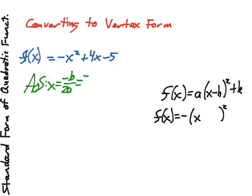this will be a negative 4 over 2 times negative 1, which is negative 4 over negative 2, which is simply 2. So the x part of our vertex is 2.